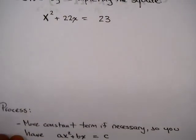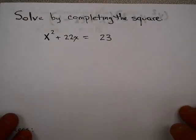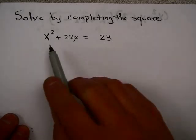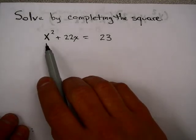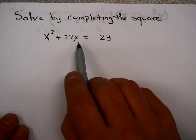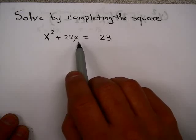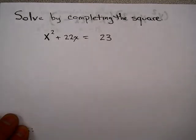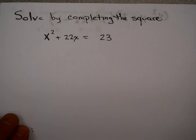Let's talk about this idea of completing the square. Completing the square creates a perfect square trinomial on one side of the equation. After doing that, you can use the square root property to help you solve for x. It's easiest to see this by an example.